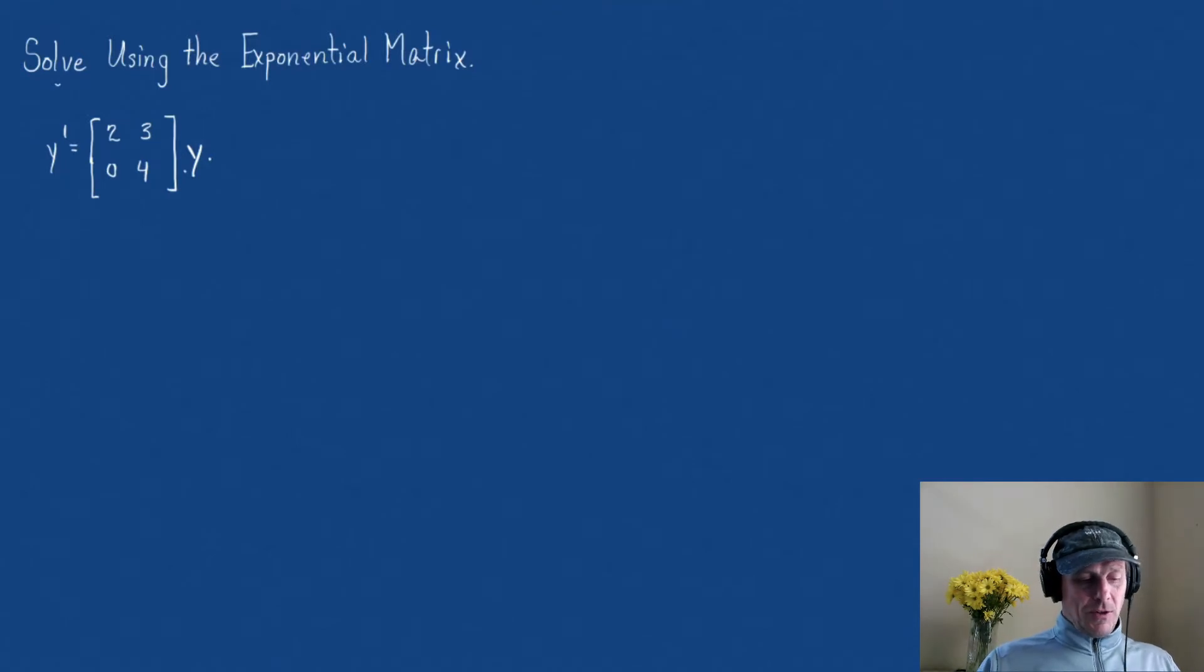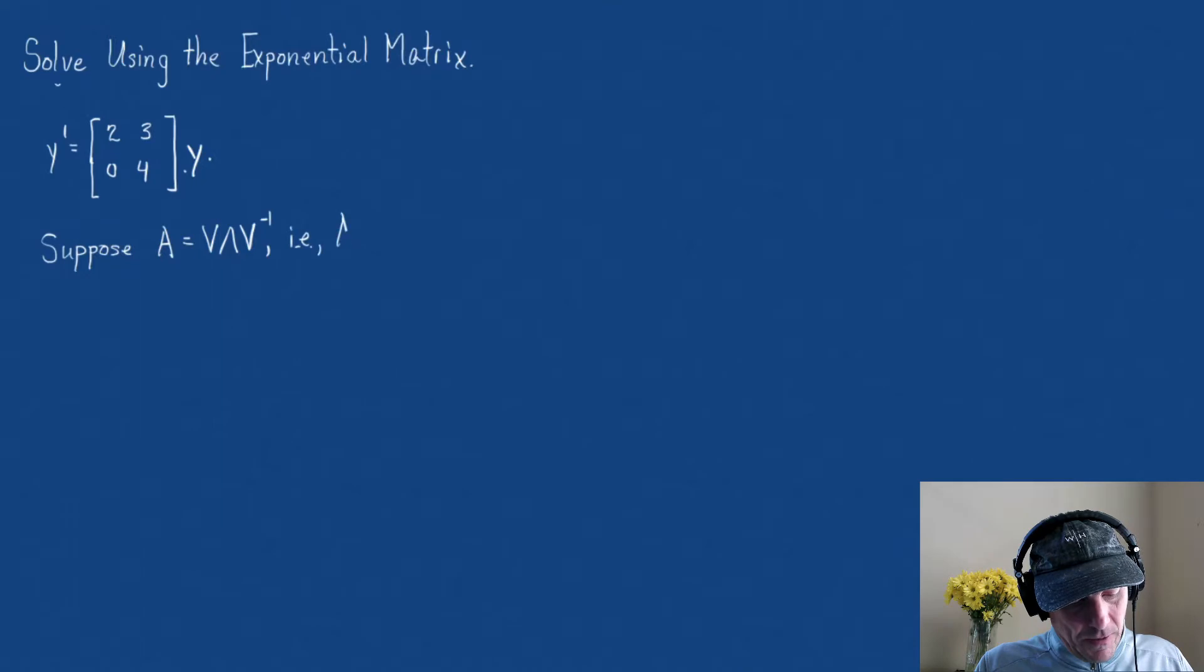The first thing I'm going to do is let's recall one of the properties we learned. We said that if, suppose, suppose that A equals V lambda V inverse, in other words, A is diagonalizable.